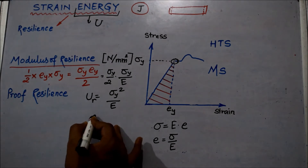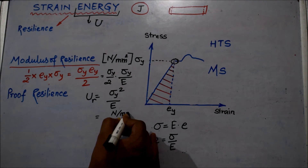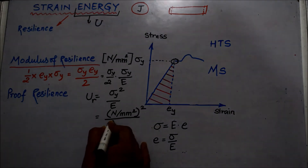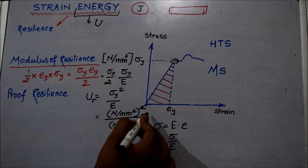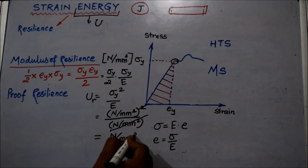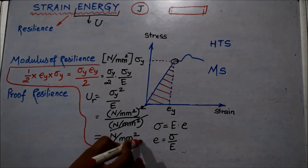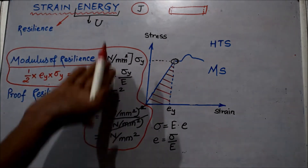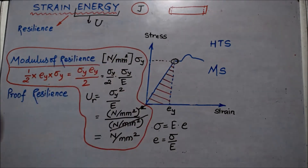Looking at the SI unit again: sigma_y squared gives units of (Newton per mm squared) squared, divided by E whose unit is also Newton per mm squared. The squared units cancel, leaving Newton per mm squared. So whether derived from the formula or from dimensional analysis, we always arrive at the same SI unit: Newton per mm squared. This confirms the practical derivation of modulus of resilience.